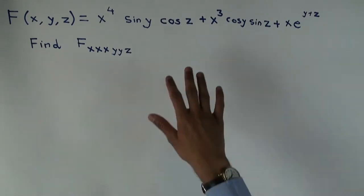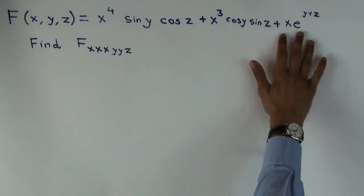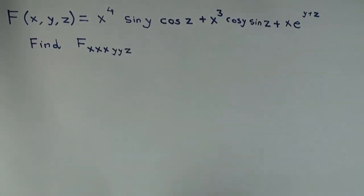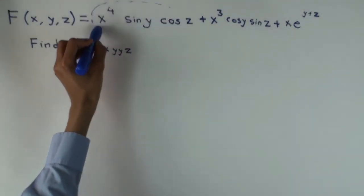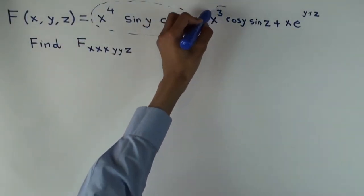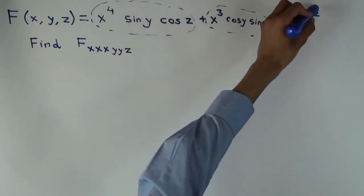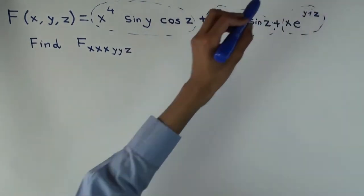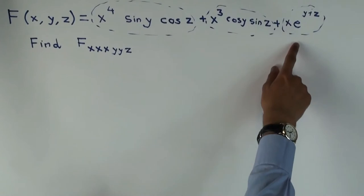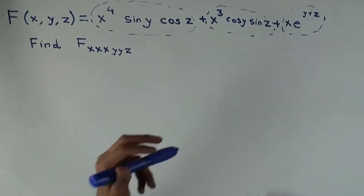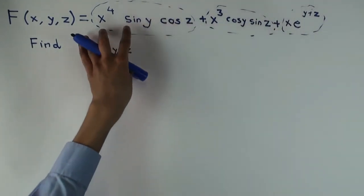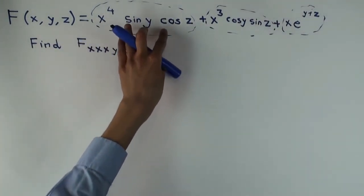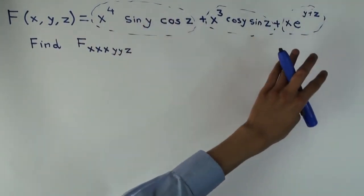And the way you'd want to think about this is this function is not multiplicatively separable as I've written, but it's a sum of three functions. Now each of these is multiplicatively separable. I mean this one actually is e to the y times e to the z, so each one is of the form function of x and function of y times function of z.